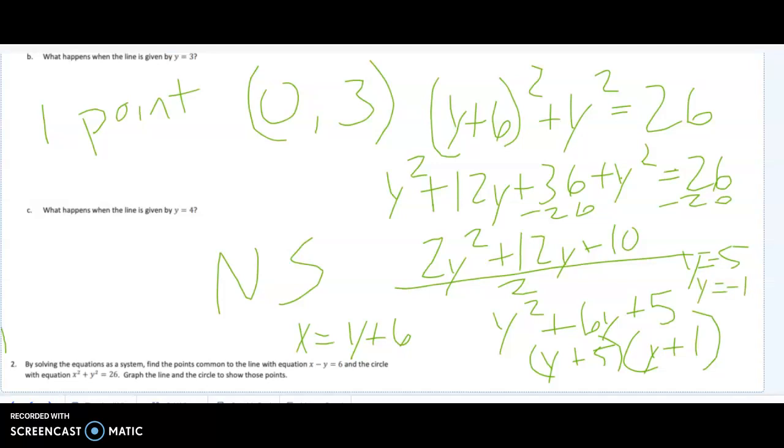So since we know what the y's are, let's solve for the x's right here. Well, negative 5 as the y will be the x of 1, and negative 1 as y will give us x of 5. So there are your two points.